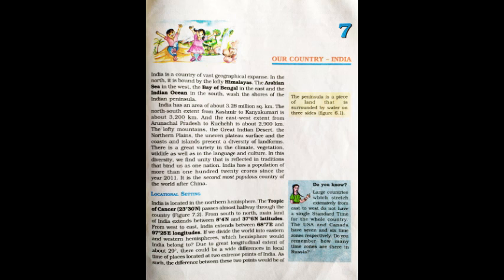Locational setting: India is located in the Northern Hemisphere. The Tropic of Cancer passes almost halfway through the country. From south to north, the mainland of India extends between 8 degrees 4 minutes north and 37 degrees 6 minutes north latitudes. From west to east, India extends between 68 degrees 7 minutes east and 97 degrees 25 minutes east longitudes. India belongs to the eastern hemisphere.